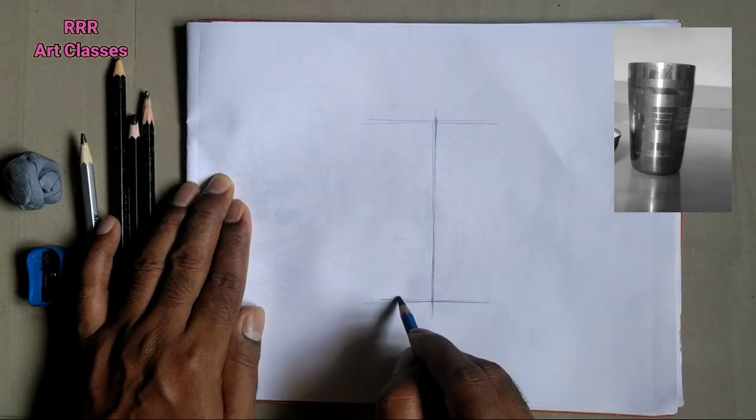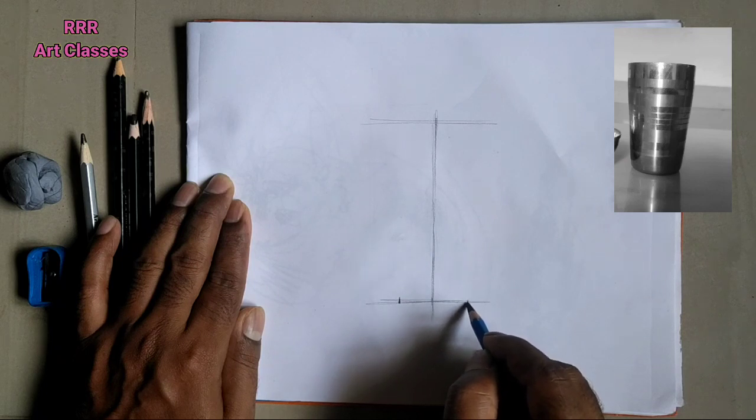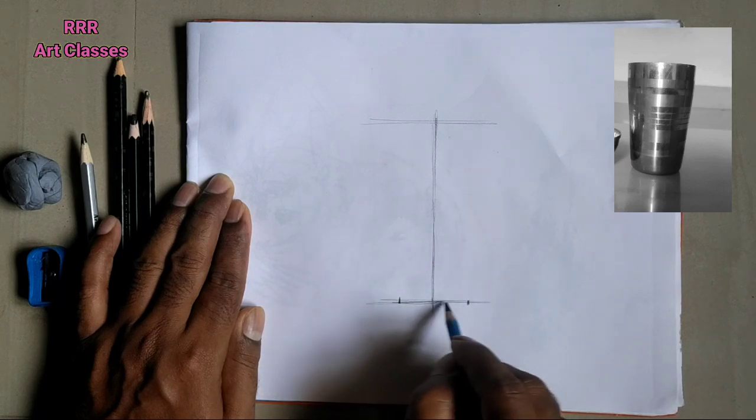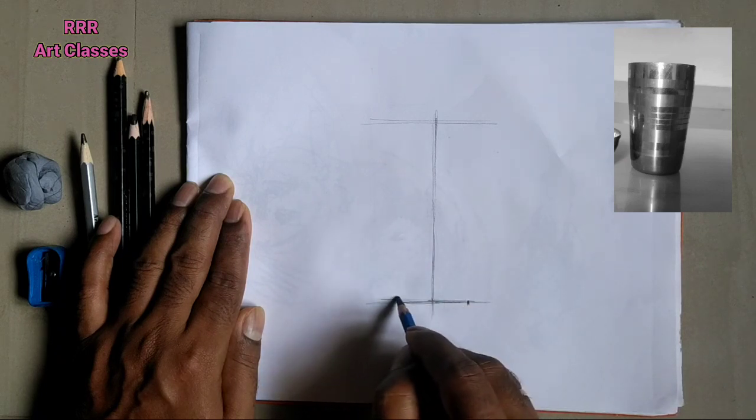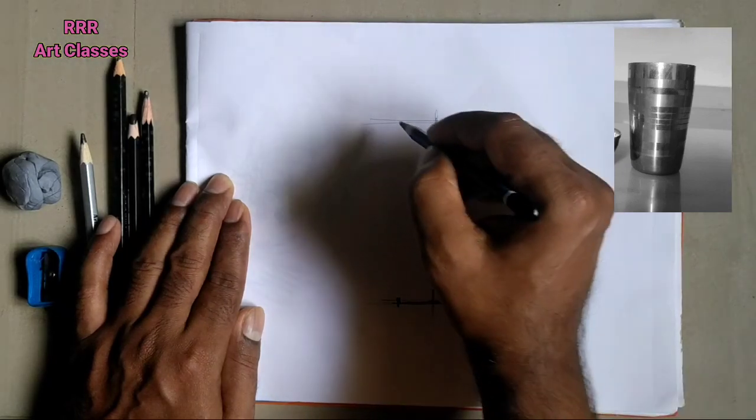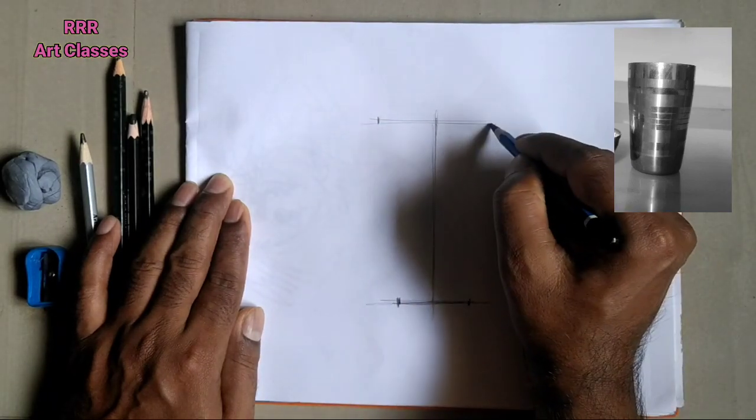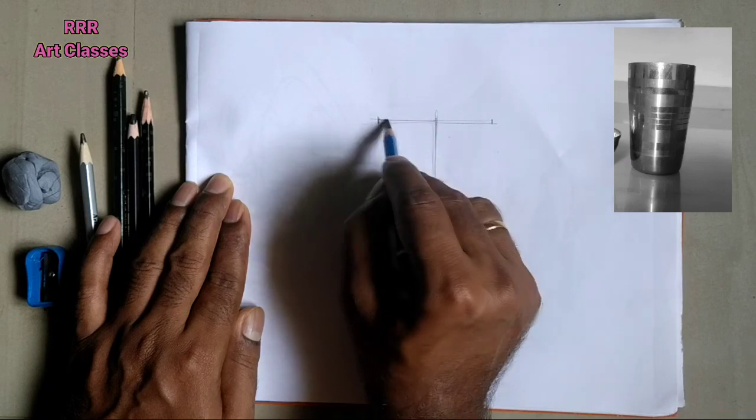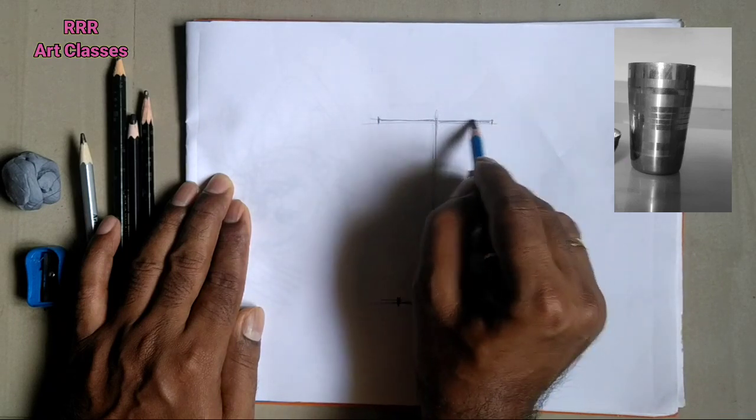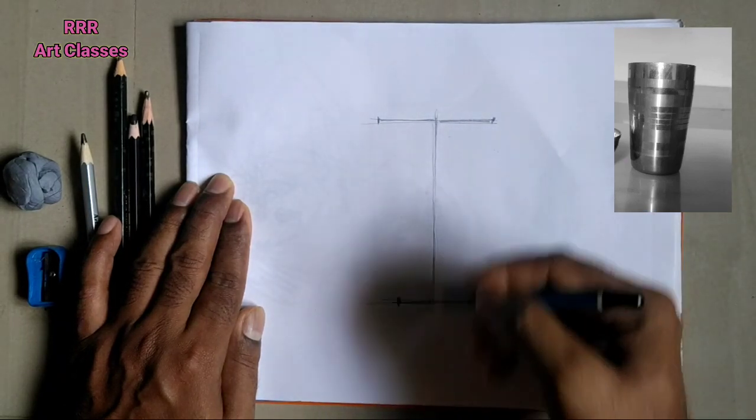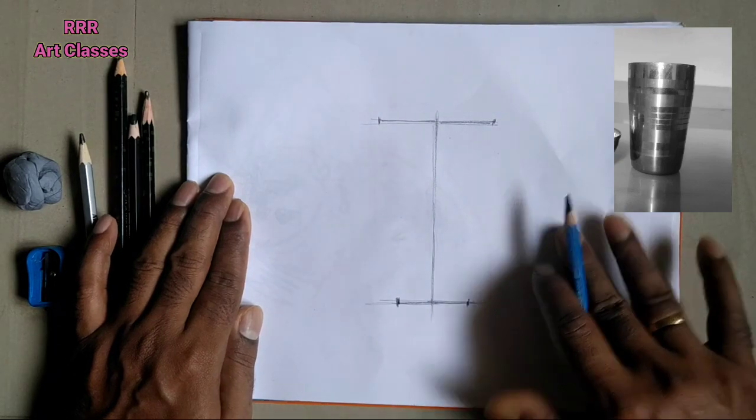So what we will do, from that middle point, we will measure towards left and towards right. Equal distance will take two points for the bottom and similarly for the top. In the top, it will be a little bit more than the bottom one.